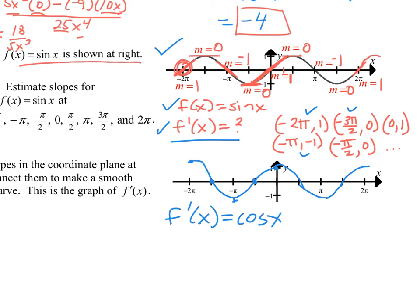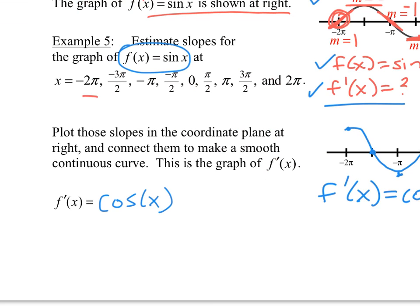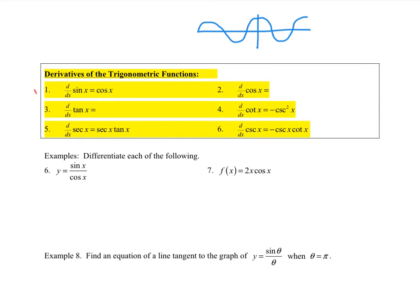The derivative of sine of x is cosine of x. Number 2: the derivative of cosine of x — if we do a similar thing and plot the slopes on the cosine graph, the slope here is 0, then negative 1, then 0 because there's a horizontal tangent, then 1, then back to 0. That resulting graph is not the sine — it is the opposite of the sine. So the derivative of cosine of x is negative sine of x.